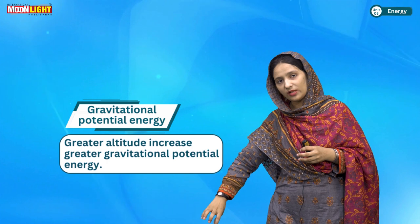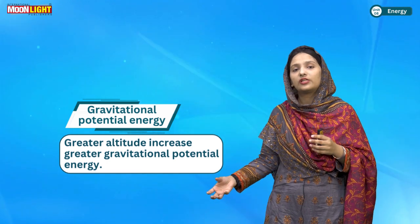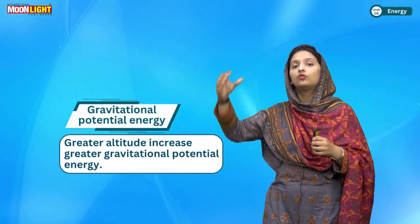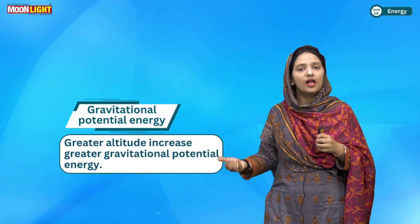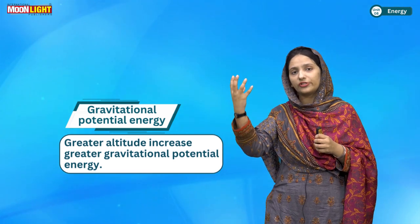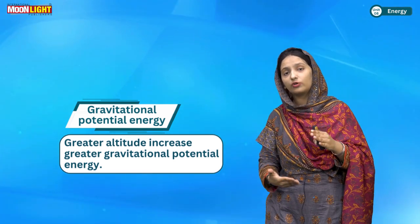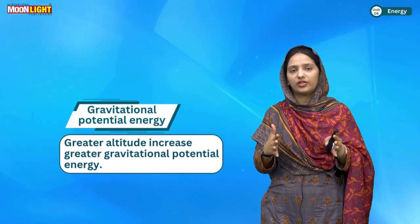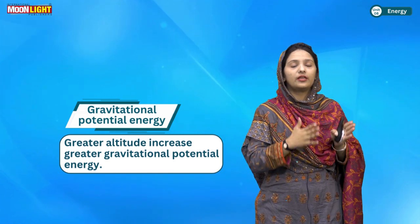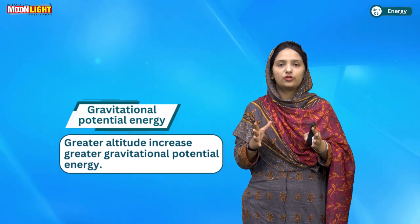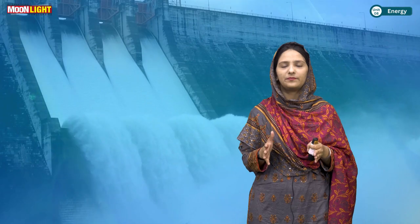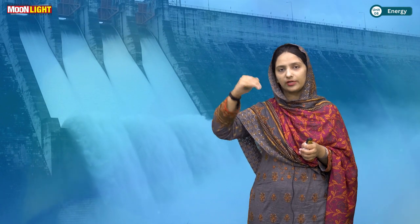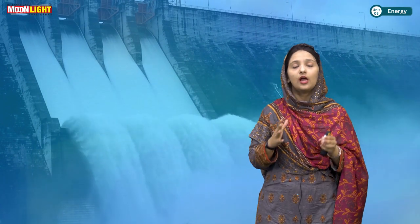For example, if you take a ball and keep it at a lower height, the gravitational potential energy will not be so much. But if you take it to a greater height, the gravitational potential energy will be more. As the object comes down toward Earth, the gravitational potential energy converts. An example is water stored in a dam — the water is at height, and as it comes down, we can produce electrical energy from it.